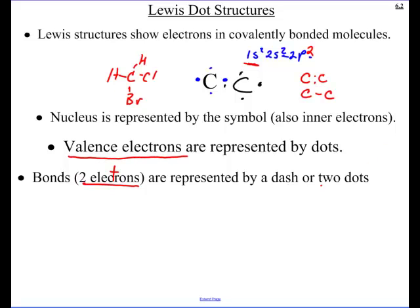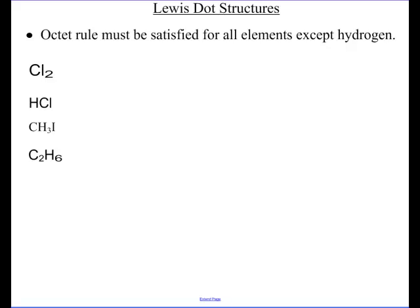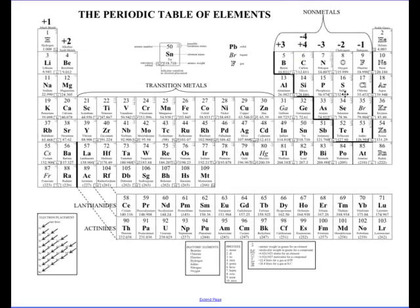Let's try a couple. The important thing is that atoms bond to get an octet — whether sharing or transferring electrons, they want an octet. So the rule must be satisfied that they all have an octet, except for hydrogen. Hydrogen doesn't need 8 because in the first energy level you can only hold 2 electrons, so hydrogen only needs to bond with 1 other electron.